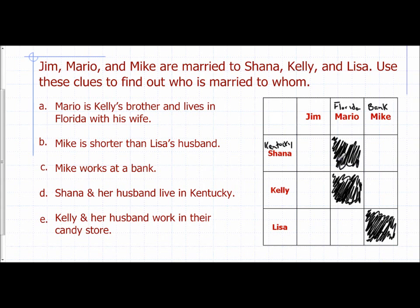Mario is not married to Shayna, and Mario is not married to Kelly, so the only remaining box means Mario must be married to Lisa. Once I place that check mark, I can fill in the rest of that row — Jim cannot be married to Lisa since Mario already is.